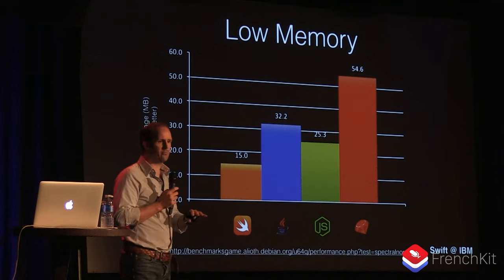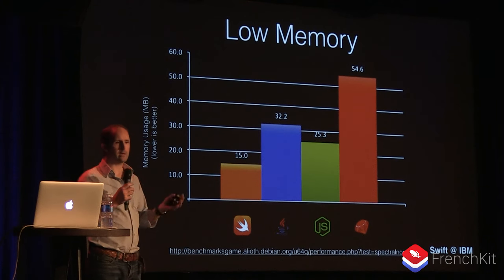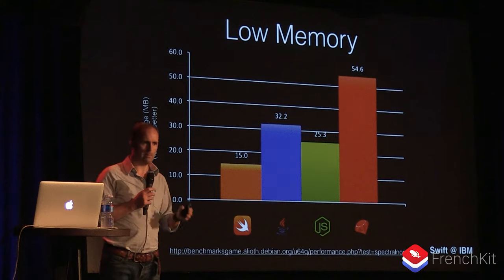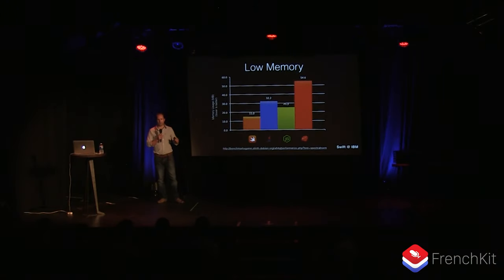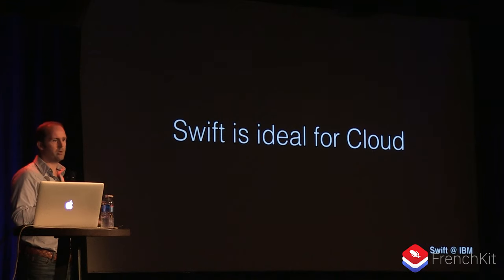Swift is both a highly performant language and a small one in terms of memory. This is really critical if you ever need to deploy to the cloud, because almost every cloud charges according to gigabyte-hours or some form of memory-based charge. On AWS you get a 2 or 4 gigabyte image; PaaS clouds charge specifically on the amount of memory used per hour. So having a highly performant language that uses very little memory is very, very good for cloud deployments — Swift is an ideal language for the cloud because of its high performance and low memory characteristics.